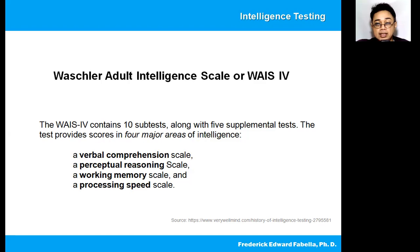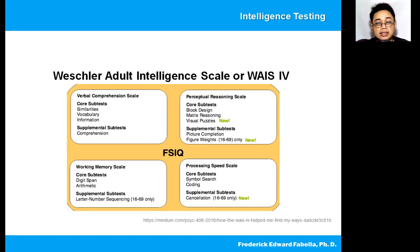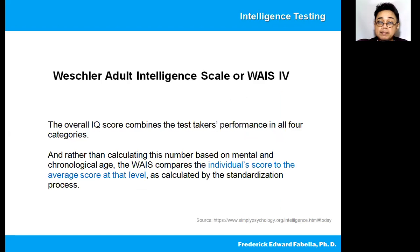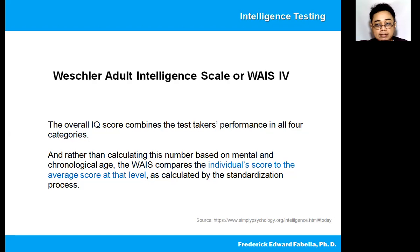The four areas are: first, verbal comprehension; second, perceptual reasoning; third, working memory; and fourth, processing speed. Looking at the diagram, you can see the distribution of items in the Wechsler Adult Intelligence Scale across the verbal comprehension scale, working memory scale, perceptual reasoning scale, and processing speed scale. The overall IQ combines the test taker's performance in all four categories. Rather than calculating this number based on mental and chronological age, the WAIS compares the individual's score to the average score at that level, as calculated by the standardization process.